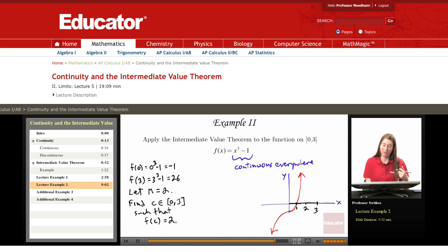This curve is increasing from negative 1 to 26, it has to pass through 2 at some point. So here would be our work for this. We could say f(c) is c cubed minus 1 which we want to equal the m value of 2.